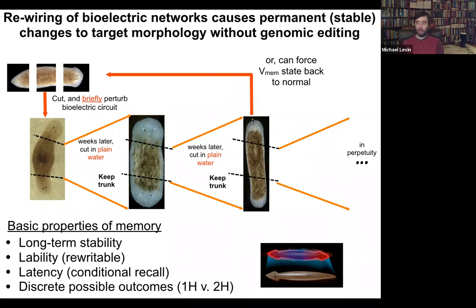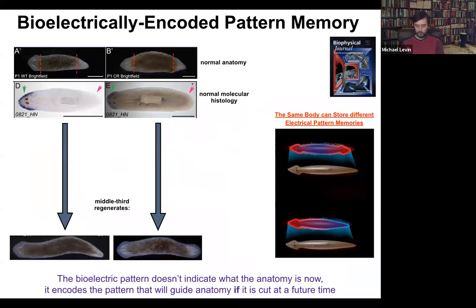We can, in fact, set the bioelectric circuit back to normal, and it goes back to being a single-headed animal. A normal planarian body is able to store at least two different ideas of what a correct planarian is supposed to look like. Here's a single-headed planarian — if we look at the molecular markers, the anterior marker is in the head, not the tail, and if you amputate, you get a perfectly normal single-headed animal.